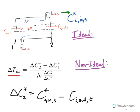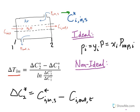The way you go about finding C star depends on the type of equilibrium between your liquid phase and vapor phase. For an ideal liquid-vapor equilibrium, the partial pressure of a species equals the molar fraction in the gas phase times the total pressure, which also equals the molar fraction in the liquid phase times the vapor pressure. For the non-ideal case, the partial pressure equals the molar fraction in the liquid times Henry's Law coefficient. For this problem, we'll treat the liquid-vapor equilibrium as non-ideal.